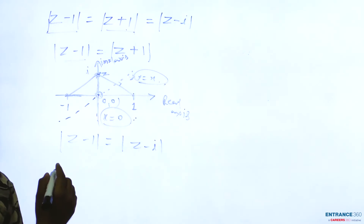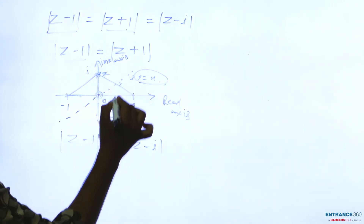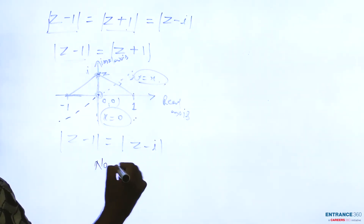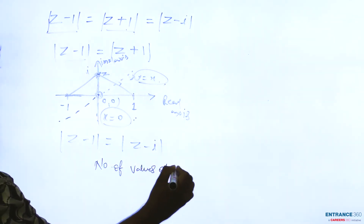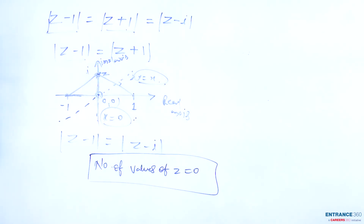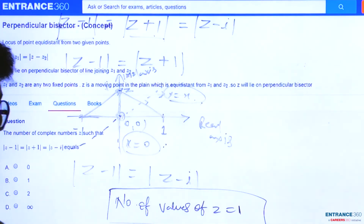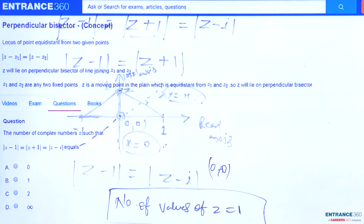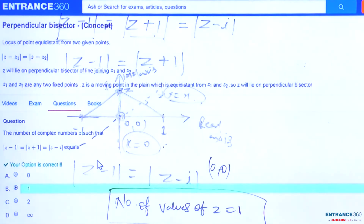With y = x and x = 0, the intersection of these two lines is the origin, (0, 0). So the lines intersect at the origin only, meaning the number of values of z equals 1. The origin is the only intersection point, and looking at the options, option B is the correct answer: the number of complex numbers z equals 1.